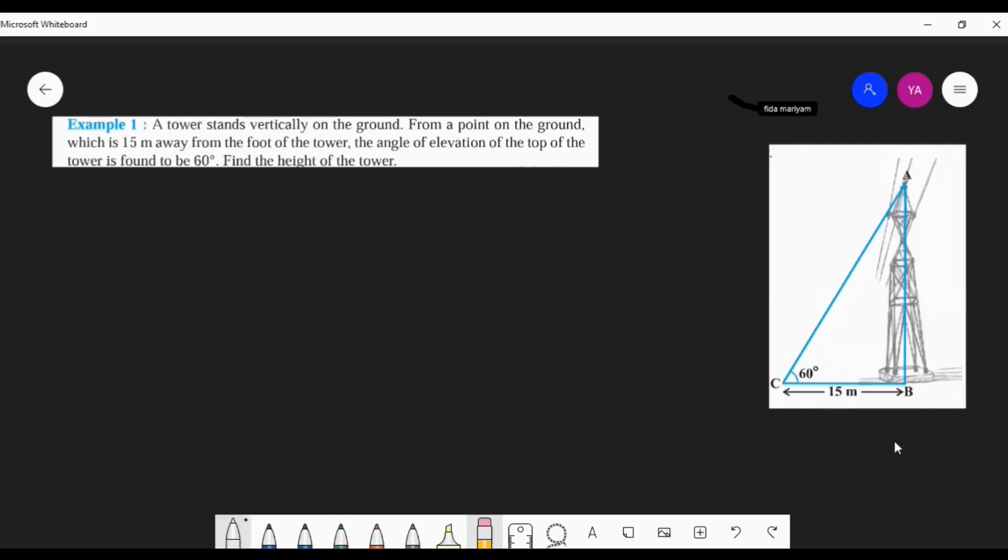Here there is no height of man or observer mentioned, so you want to take the height of the observer or man only if that is mentioned in the question. Otherwise you can simply draw a triangle like this, no problem.